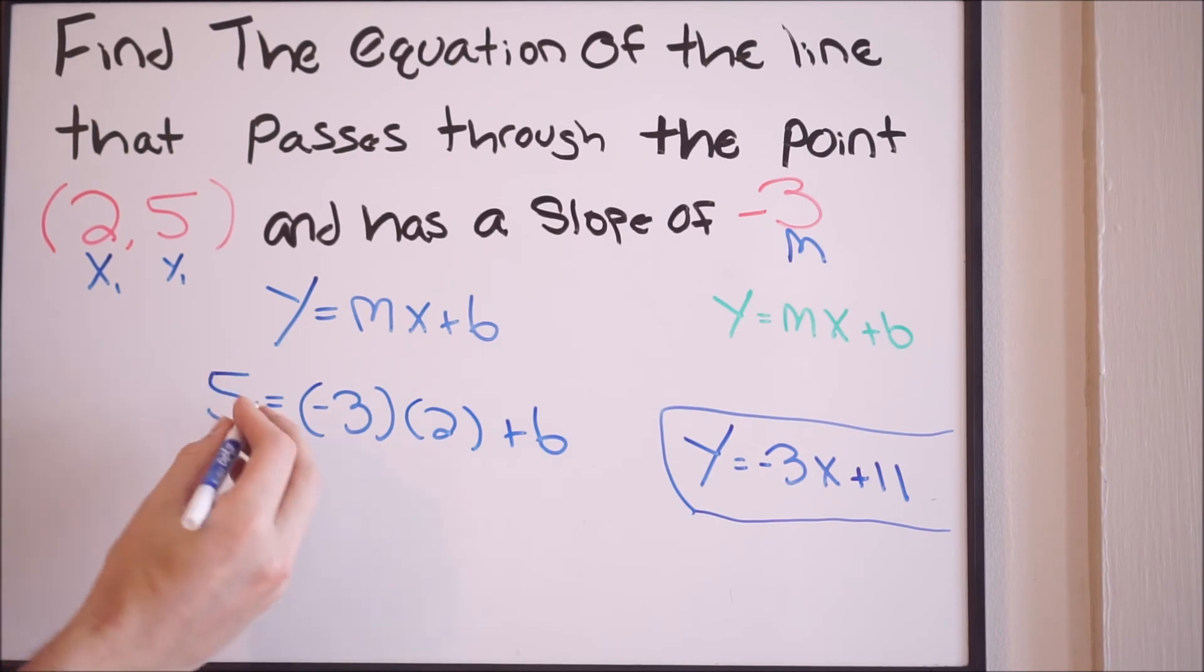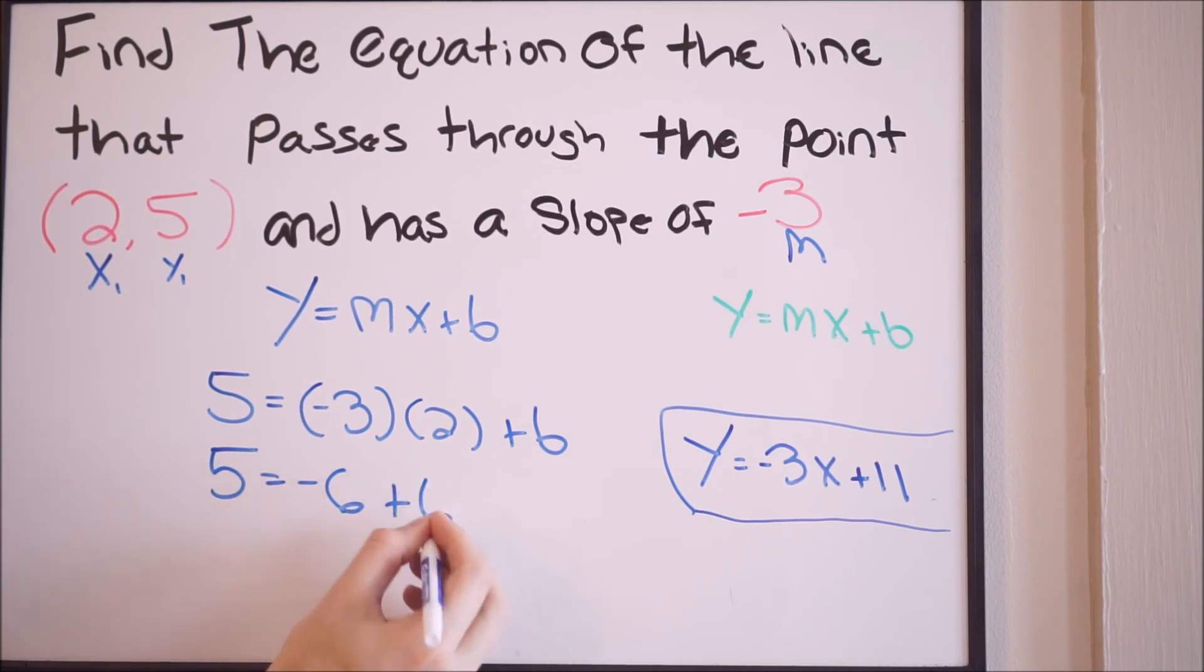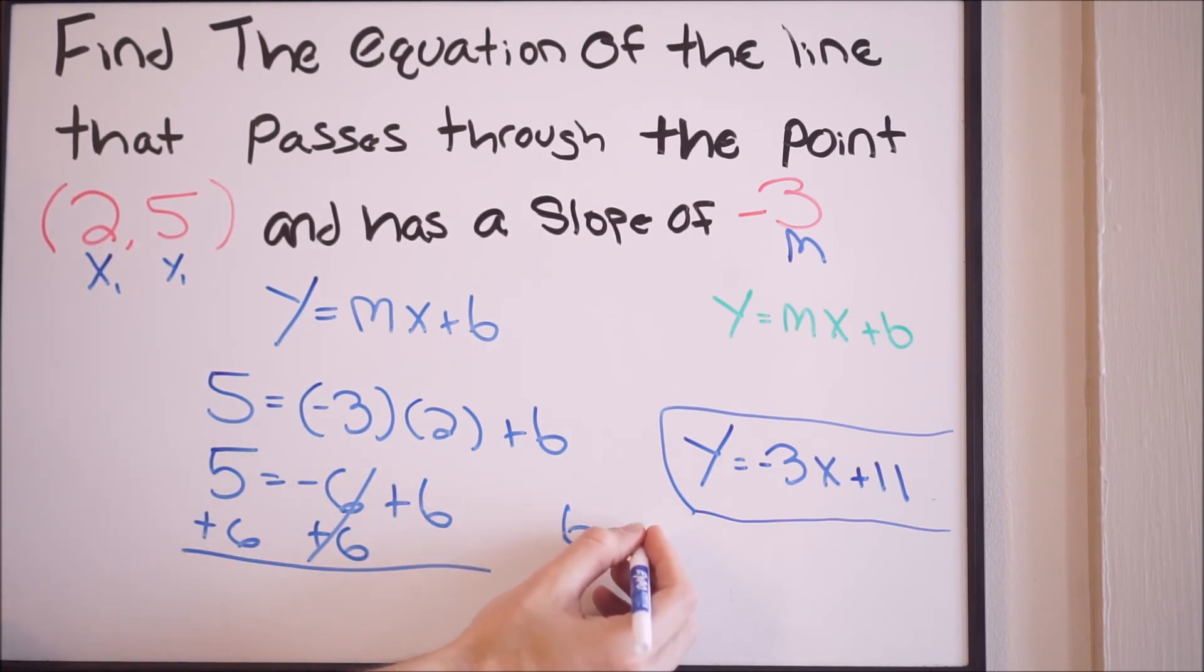So let's just go ahead and do this out and solve for b. We get 5 equals negative 6 plus b. We want to add 6 on both sides, and we can see here that b is equal to 11.